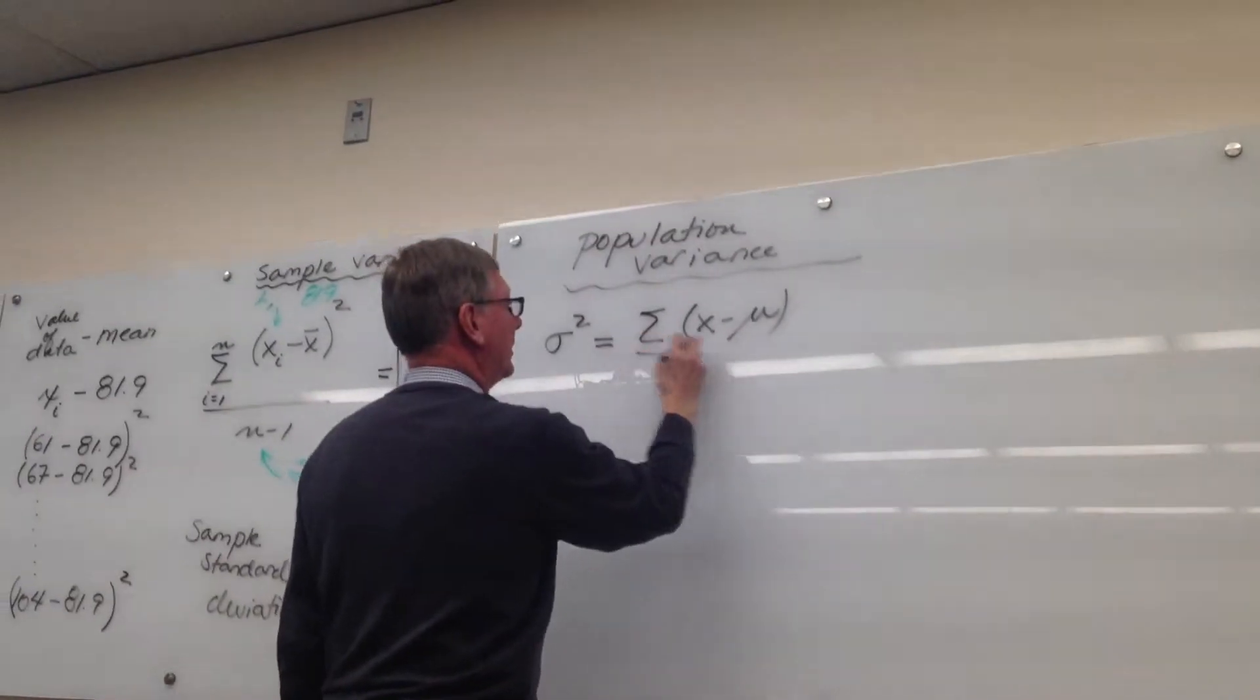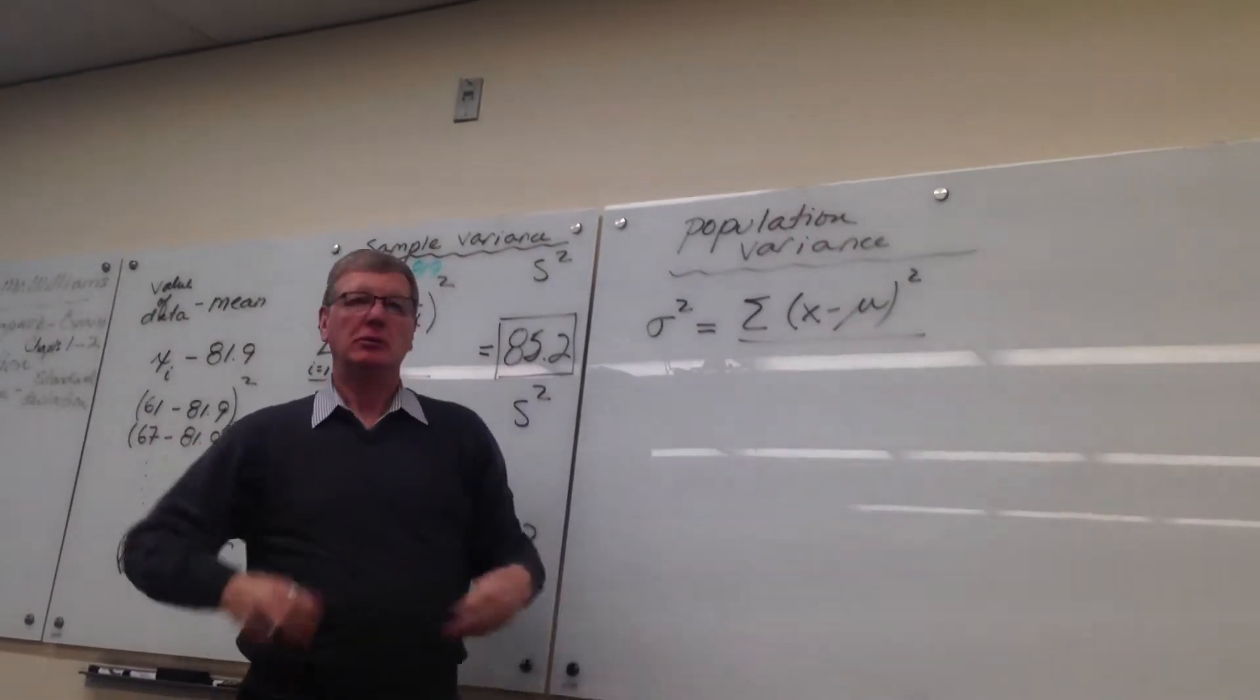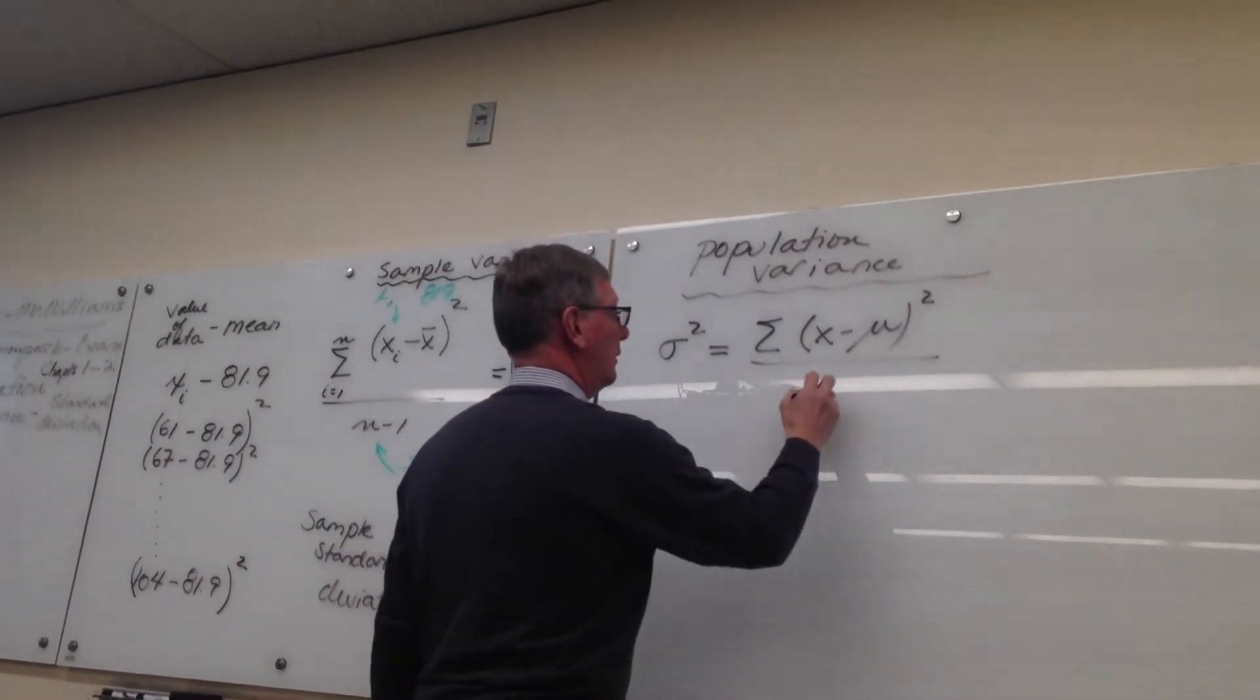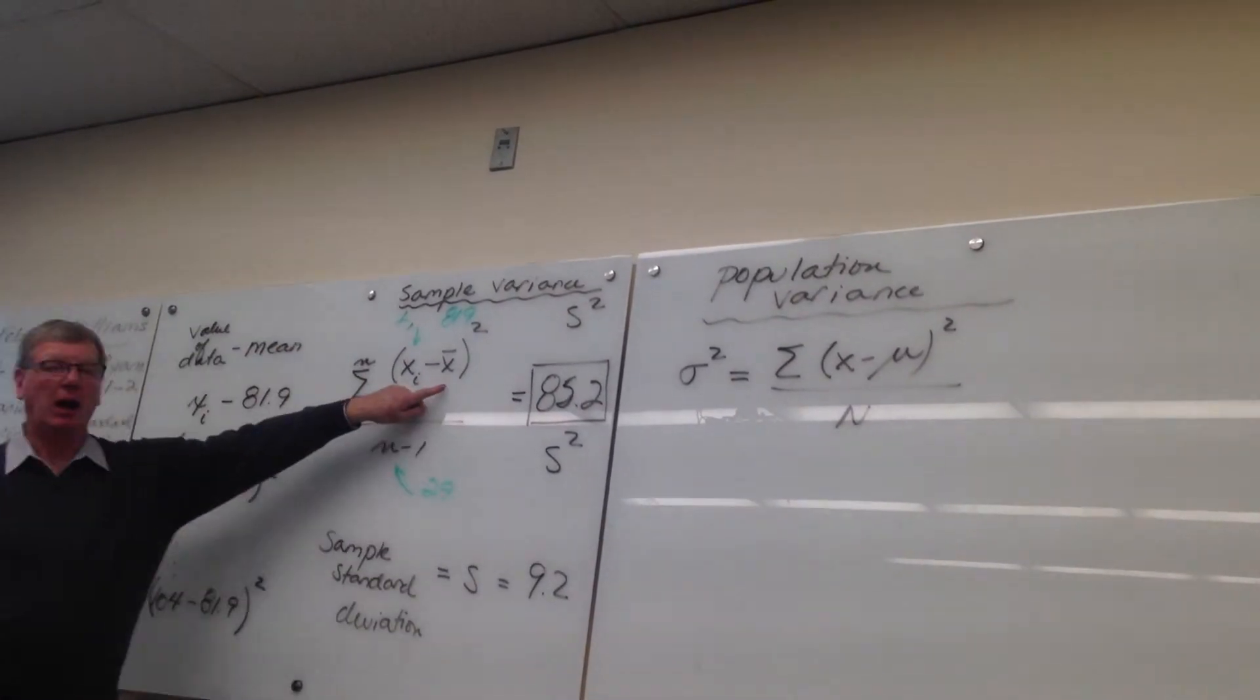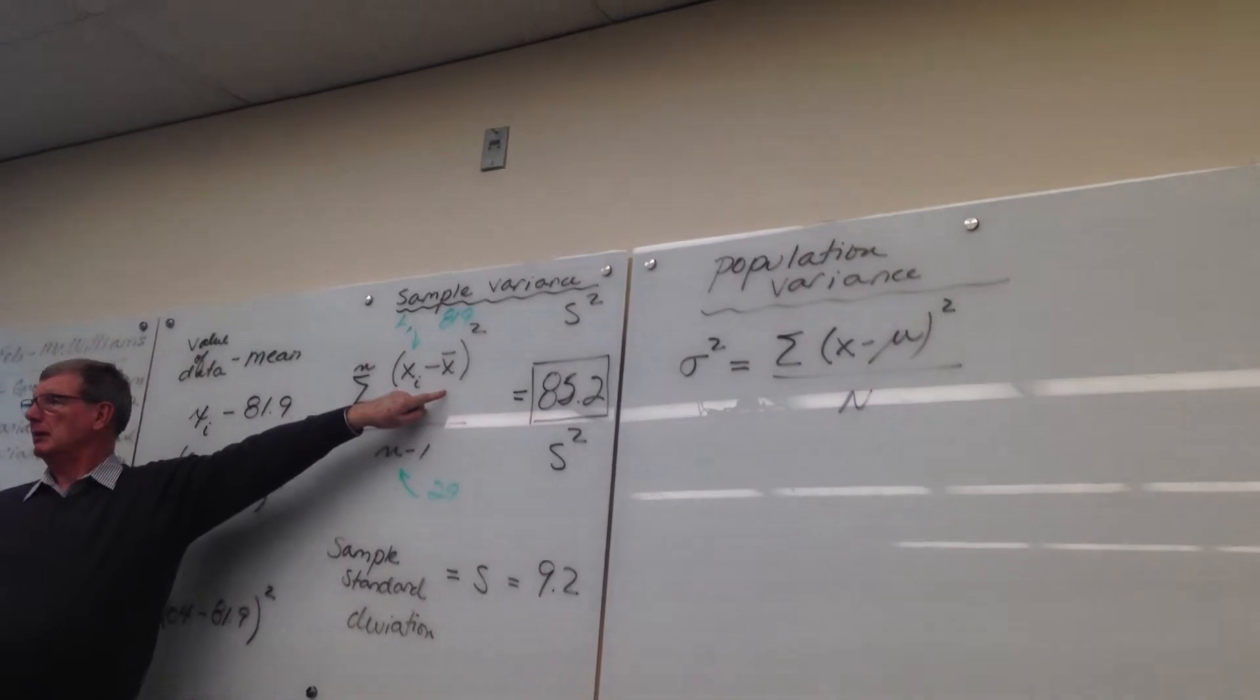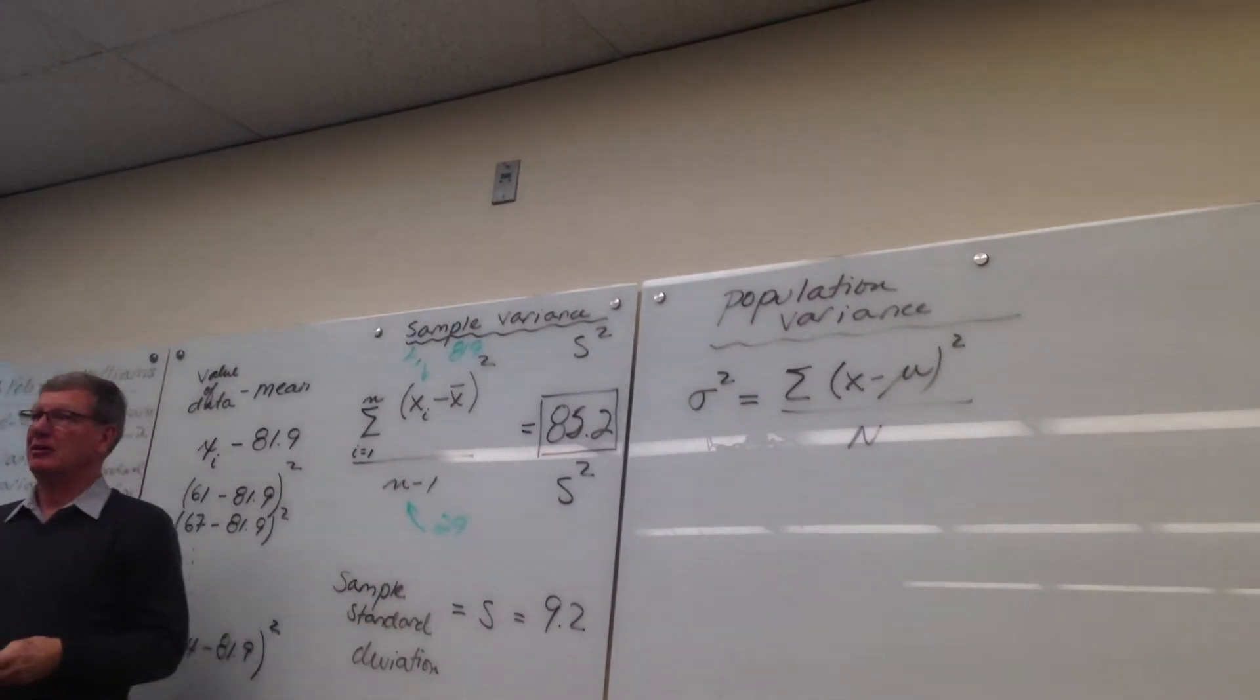But if I had the population, I would know the population mean, which is mu. We don't know that. But what we know is x-bar, the sample mean. You get the sample variance and sample standard deviation.